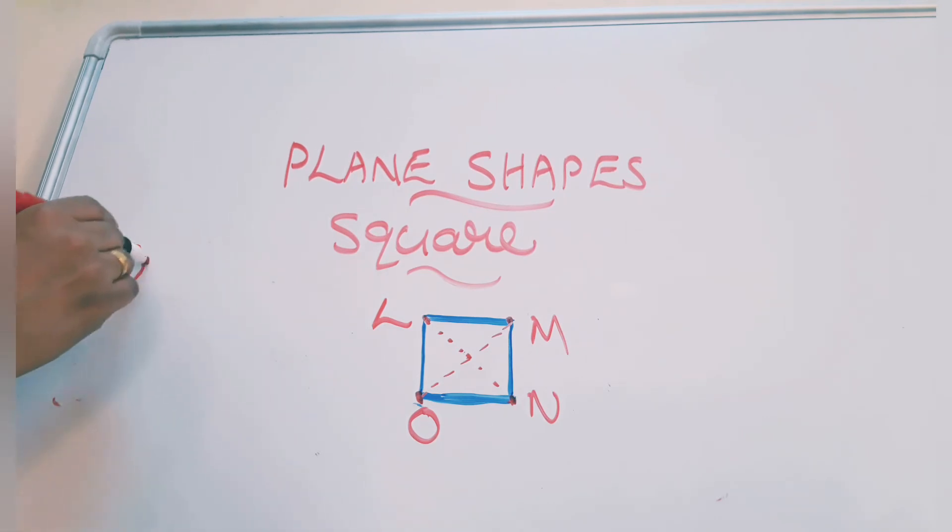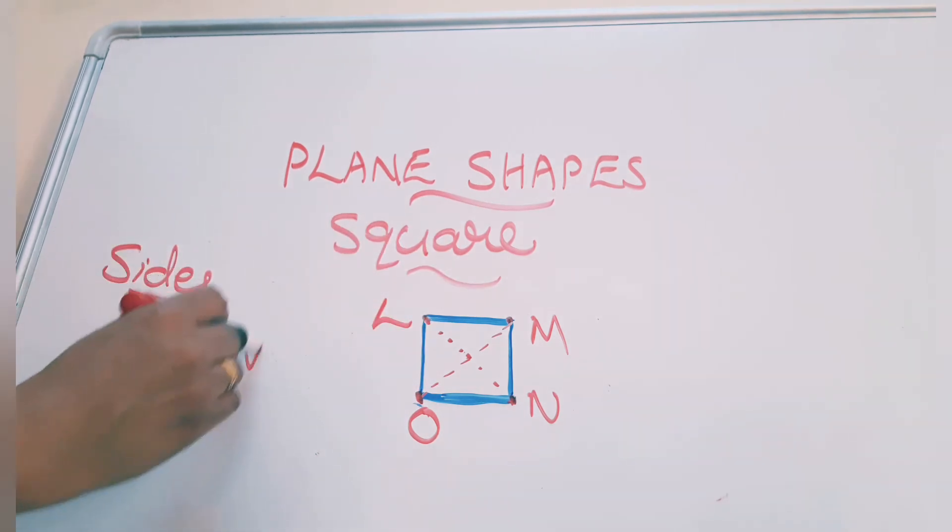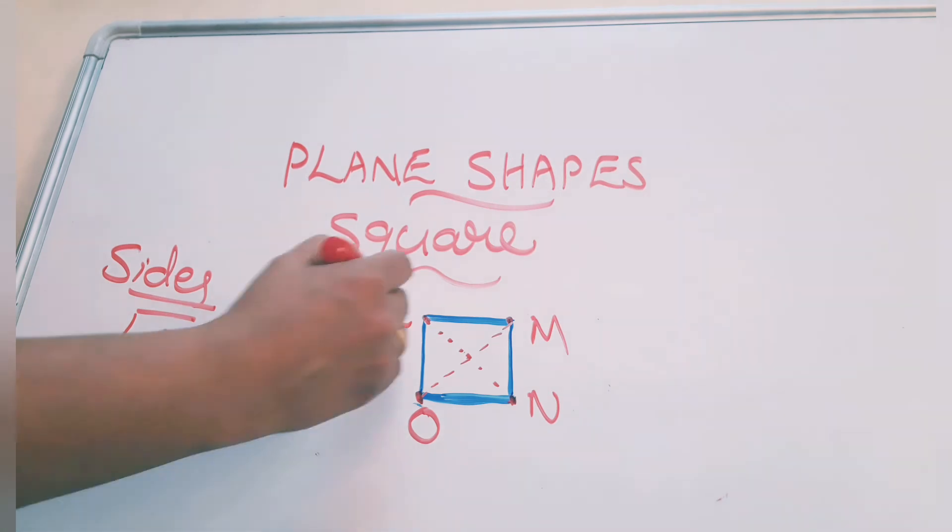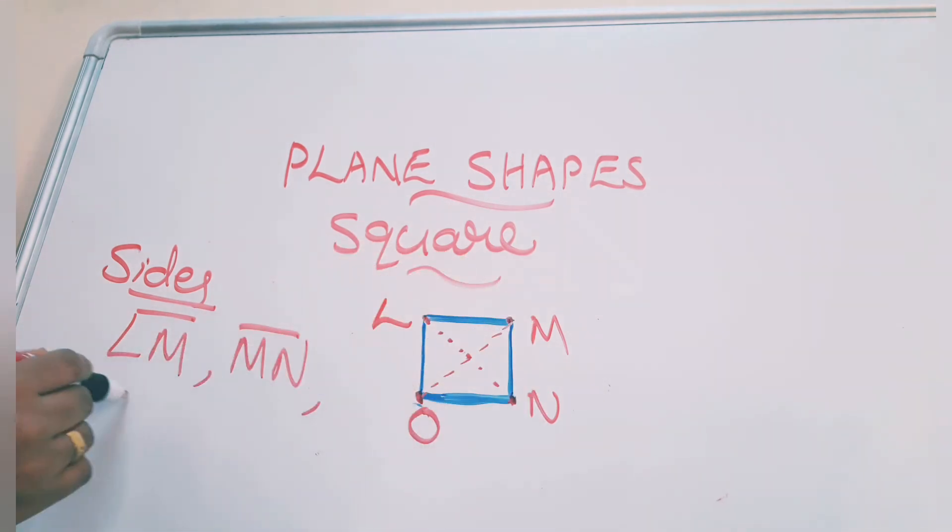We know its sides. Four equal sides. Which all are its sides? LM, MN, NO. Then last one LO. Four sides.